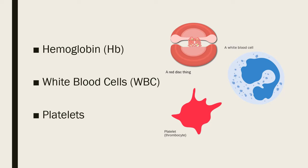The CBC, or complete blood count, measures just that — the things in the blood. The main components are hemoglobin, the white count, and the platelet count. Additionally, there are a number of other things measured, such as the MCV, the neutrophil and lymphocyte count, and red cell distribution width, but the majority of the time hemoglobin, white count, and platelets are going to be the focus.